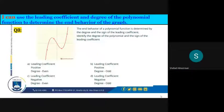The end behavior of a polynomial function is determined by the degree and the sign of the leading coefficient. Identify the degree of the polynomial and the sign of the leading coefficient.